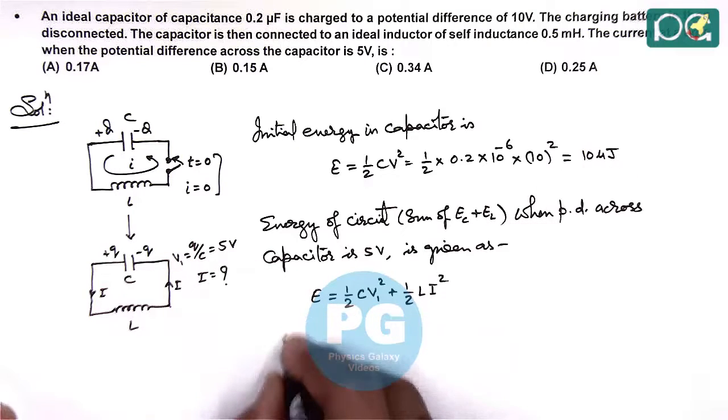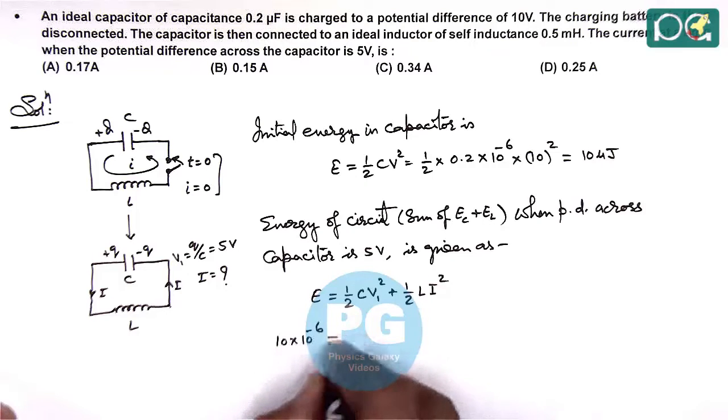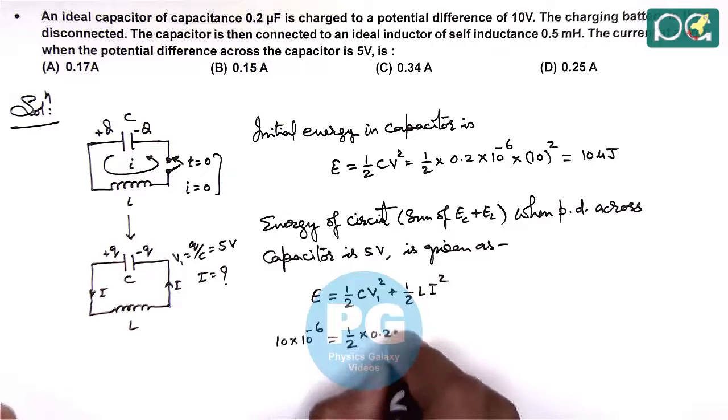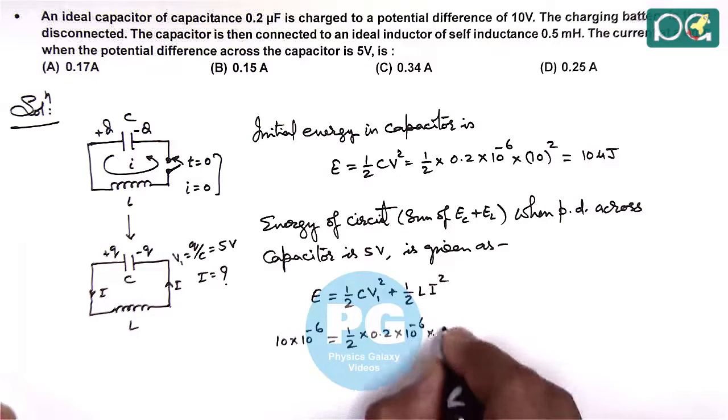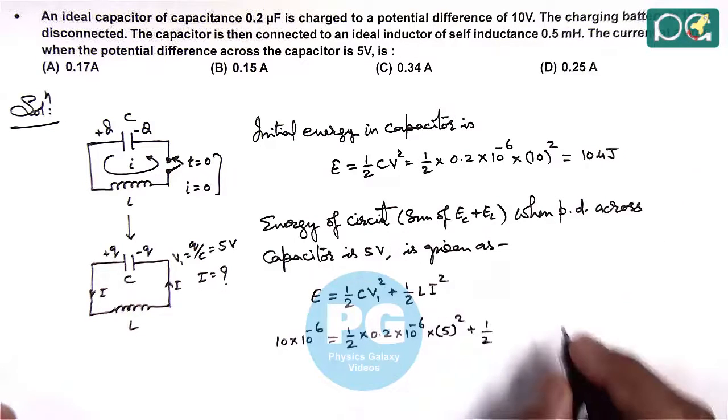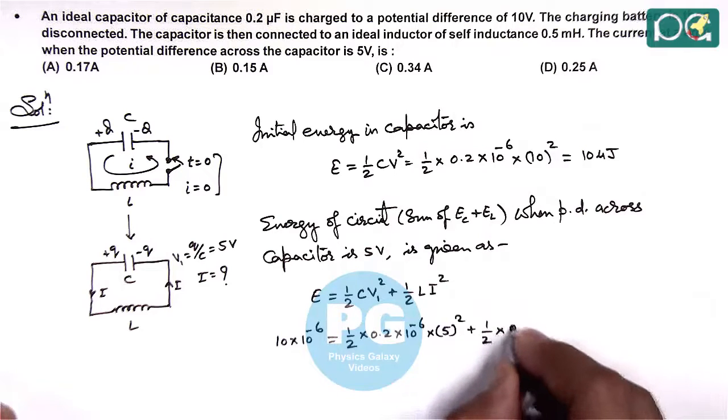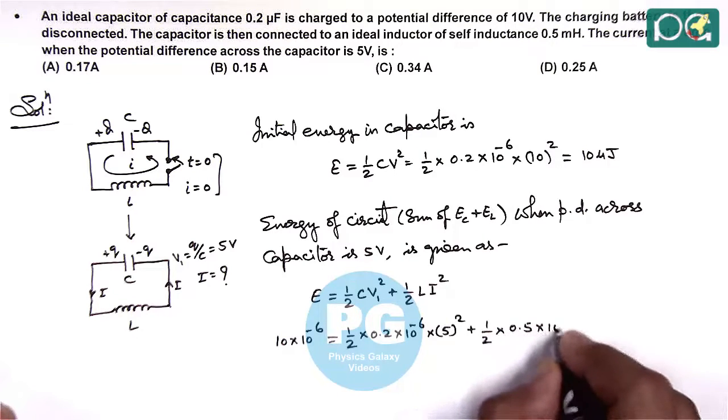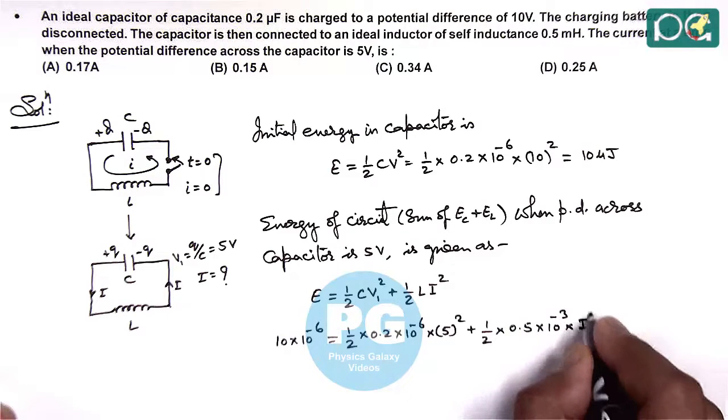E is 10 microjoules, which is 10 times 10 to the power minus 6. Substituting C as 0.2 times 10 to the power minus 6, V1 as 5 squared, plus half L as 0.5 millihenry, which is 0.5 times 10 to the power minus 3, we get 250 multiplied by I squared.